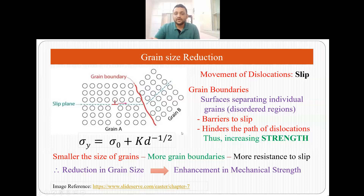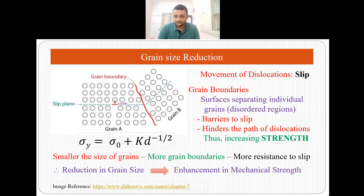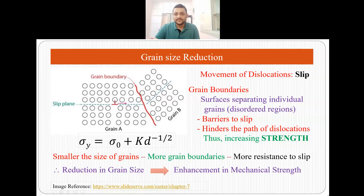This is also given by the Hall-Petch equation, where σ_y = σ_0 + k·d^(−1/2), where σ_y is the yield strength, σ_0 and k are constants, and d is the grain size or grain diameter. The Hall-Petch equation states that yield strength of the material is inversely proportional to grain size. Smaller the grain size, more grain boundaries exist, more resistance to slip is offered, leading to an increase in yield strength. Therefore, reducing the grain size enhances mechanical strength.